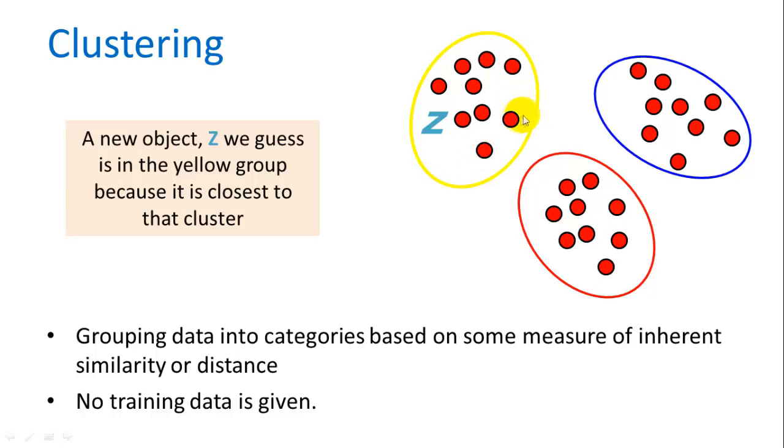So in this case, we have a yellow, a blue, and a red cluster of objects. And then we have this new object, z, and we're trying to decide which group that should belong in. And it probably belongs in this yellow group because it's closest to all these yellow objects.